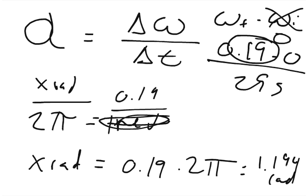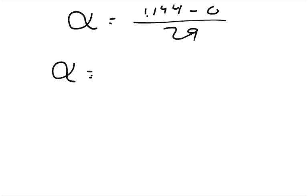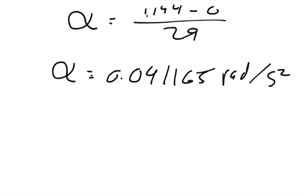So the change in angular speed is 1.194 radians over 29 seconds. The angular acceleration equals 1.194 minus 0, divided by 29 seconds, which equals 0.041165 radians per second squared.